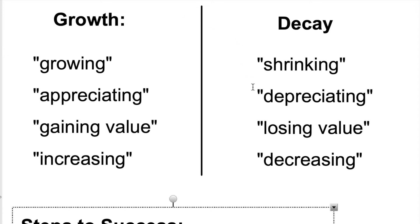Decay, on the other hand — think about if you don't brush your teeth. What's going to happen to your teeth? Your teeth are going to decay; they're going to start to wear away. The amount of tooth you have is going to decrease. Notice that decrease starts with D-E; decay starts with D-E. So some words we think about for decay would be shrinking, depreciating, or to depreciate — which just means to lose value.